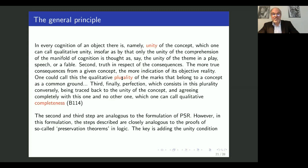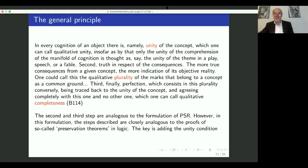So he says, cert perfection, which consists in this plurality conversely being traced back to the unity of the concept and agreeing completely with this one and no other, which one could call the qualitative completeness. So the key difference between the original formulation of the principle of sufficient reason and this formulation in paragraph 12 is the addition of the unity condition. And that does a lot of work.